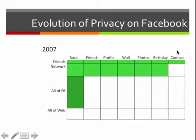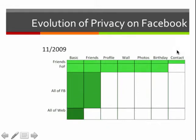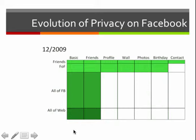In November of 2009, we see a few switches. First, we now have friends of friends who are able to see information. Your friend list has become visible to all of Facebook. And everybody on the web, even if they don't have a Facebook account, is able to see your basic profile information. Then in December of 2009, a month later, Facebook made the switch to also make your friend list visible to everyone on the web.